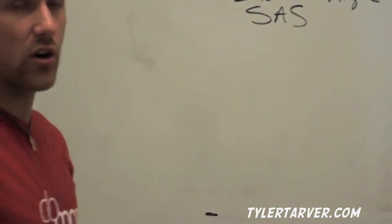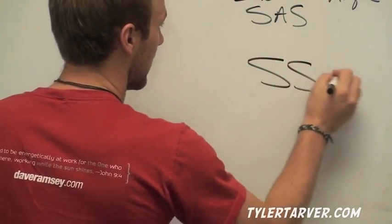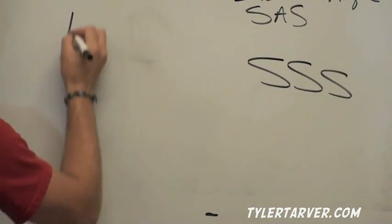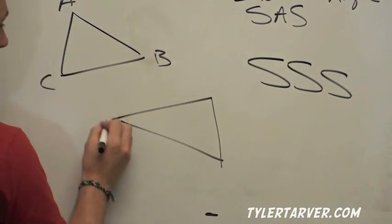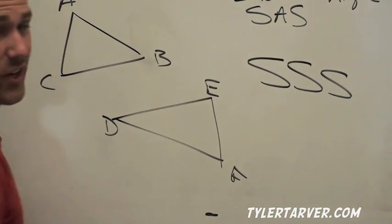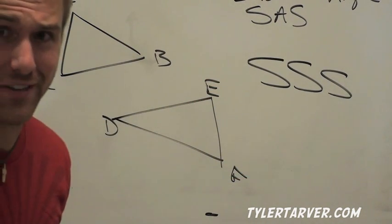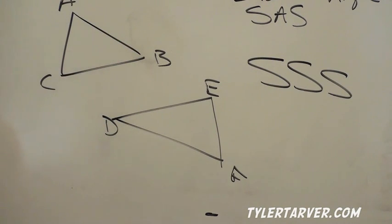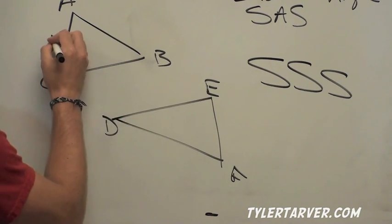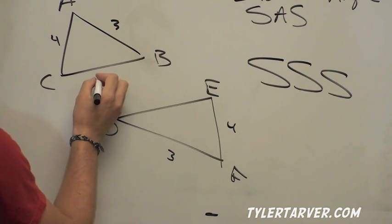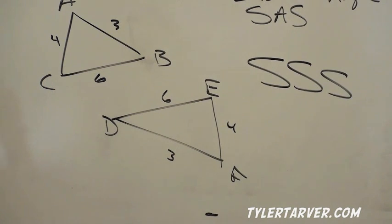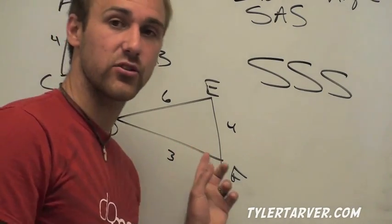Now the first theorem we're going to use to prove that triangles are congruent is called SSS or Side-Side-Side. We have two triangles, right there and right there. We'll call this one ABC and this one DEF, which you didn't notice is like the first six or seven letters of the alphabet.